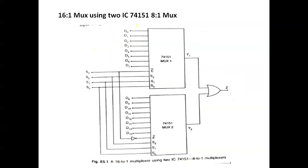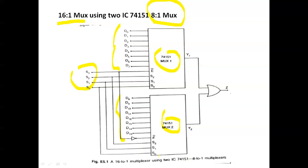Using IC 74151 (8-to-1 MUX), we can construct a 16-to-1 MUX by combining two 8-to-1 multiplexers. This shows how a higher-order multiplexer can be built from lower-order multiplexer ICs.